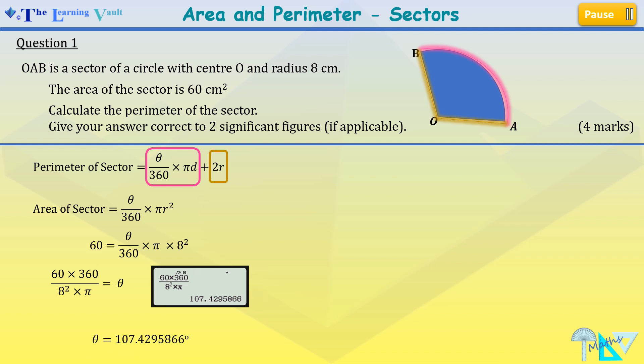Now that we have our value for theta, let's work out the perimeter of our sector.